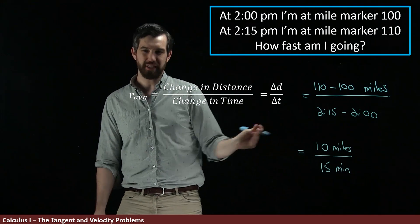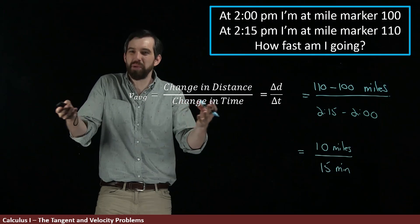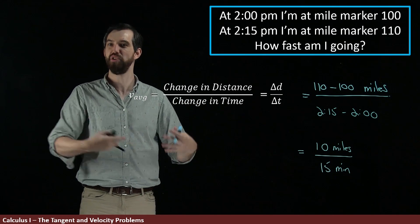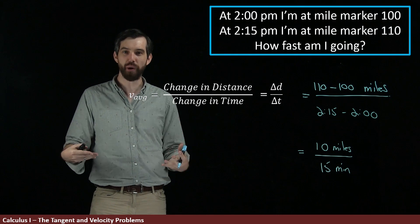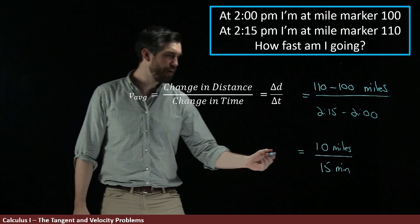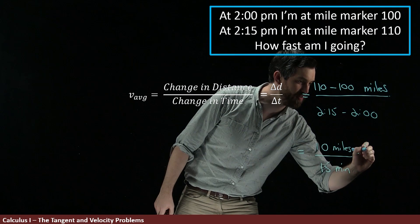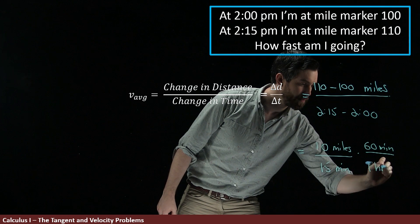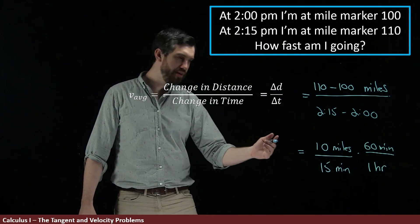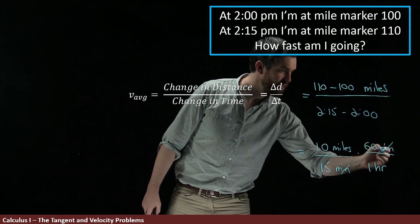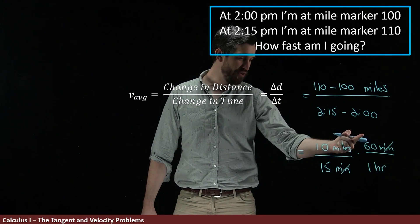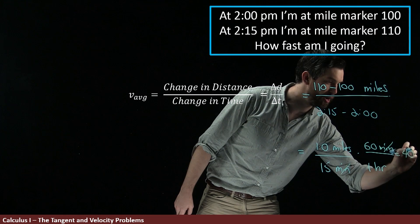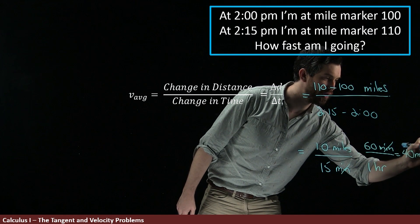Now this answer is actually perfectly acceptable, it's just that we don't typically give speeds in miles per minute, we normally give them in miles per hour. So I can do a little unit conversion here and I can say that there are going to be 60 minutes inside of one hour. And then the minutes are going to cancel and this is going to be 600 divided by 15. And so this is going to be 40 miles per hour.